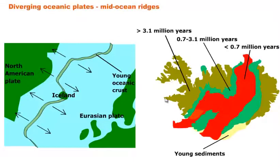The western part of Iceland belongs to the North American plate and the eastern part to the Eurasian plate. Because the two plates are moving away from each other, the width of Iceland increases about two centimeters every year — one centimeter moves to the right and one to the left. The plates move about one centimeter a year, roughly as fast as your fingernails or hair grow — you can't see it, but it can be measured.